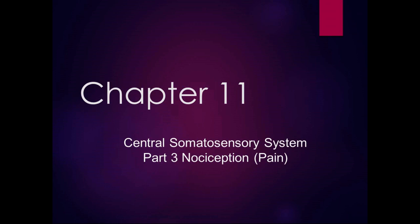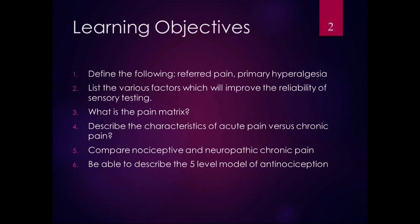All right, so in this last section of Chapter 11, we're going to talk specifically about pain and pain systems. The learning objectives for this section — I want you to be able to define referred pain and primary hyperalgesia. List the factors which will improve the reliability of sensory testing, even though that could probably have gone in a different PowerPoint, but it's all Chapter 11.